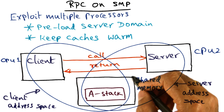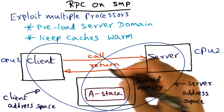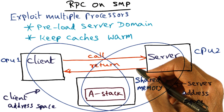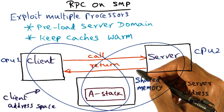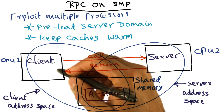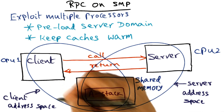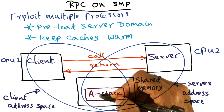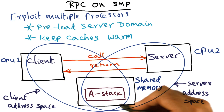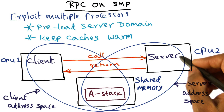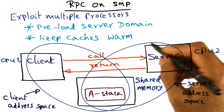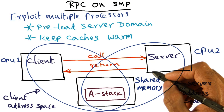Without any kernel intervention, you can actually do the call and return. The mediation happens only in the fact that the kernel has to validate the call — every time the client makes a call, it has to validate that call. But the loss of locality you can avoid by making sure that the server domain is preloaded in one of the CPUs.